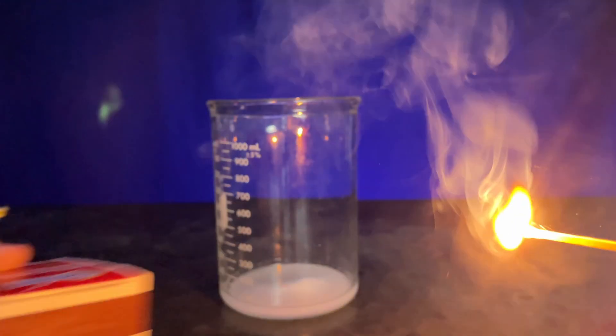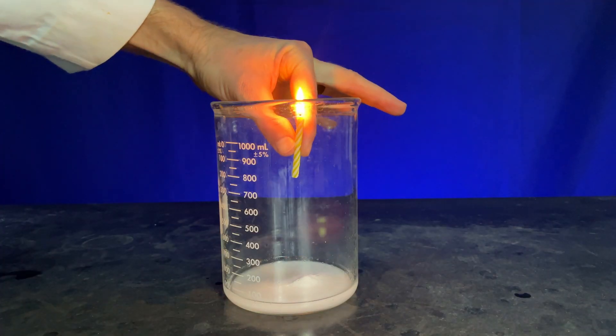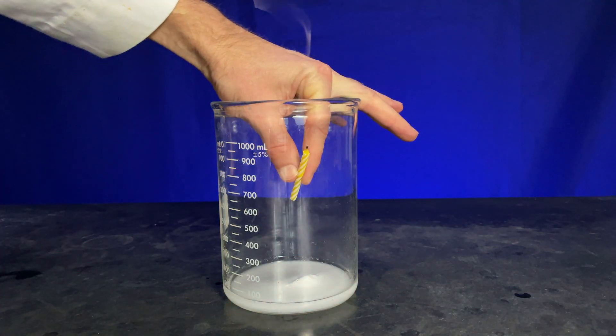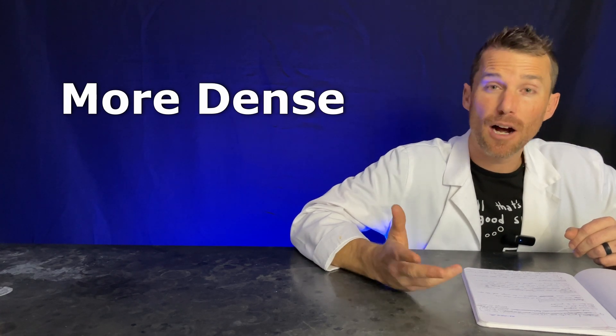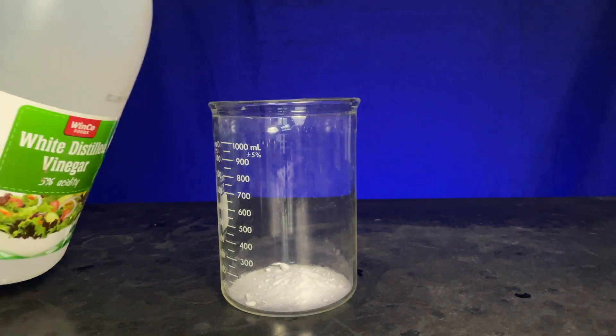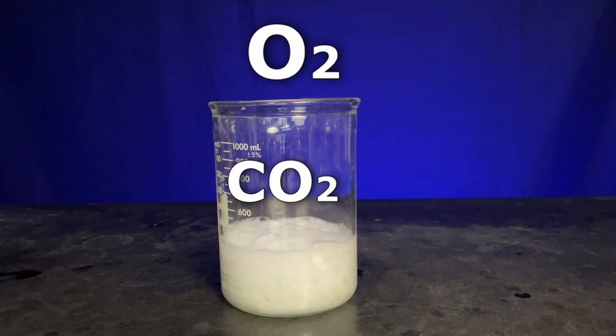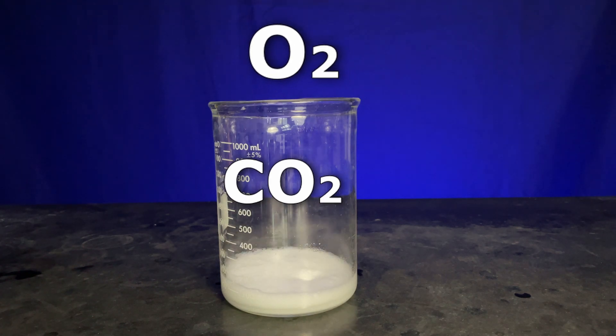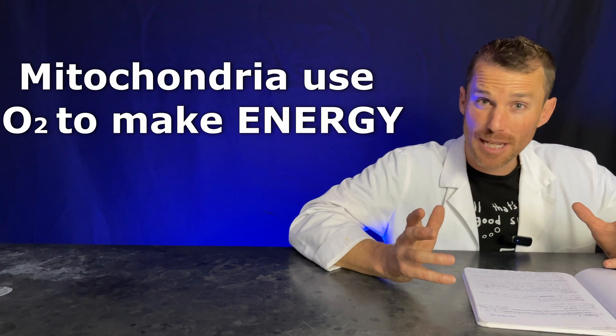But if I take a match and candle and put them in, we see that the candle immediately goes out. What happens is that carbon dioxide is more dense than the oxygen and nitrogen in the air, so the carbon dioxide displaces the oxygen and nitrogen. And we need that oxygen that got displaced in order to breathe. Our mitochondria use that to make our energy.